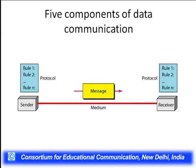This slide shows the five different components of a communication system. As you can see in this diagram, we have a sender of the information, we have a receiver of the information, the red line joining the sender and the receiver is the medium, what is being passed through the medium from sender to receiver is the message, and we also see some rules or protocols which are governing the data communication network.